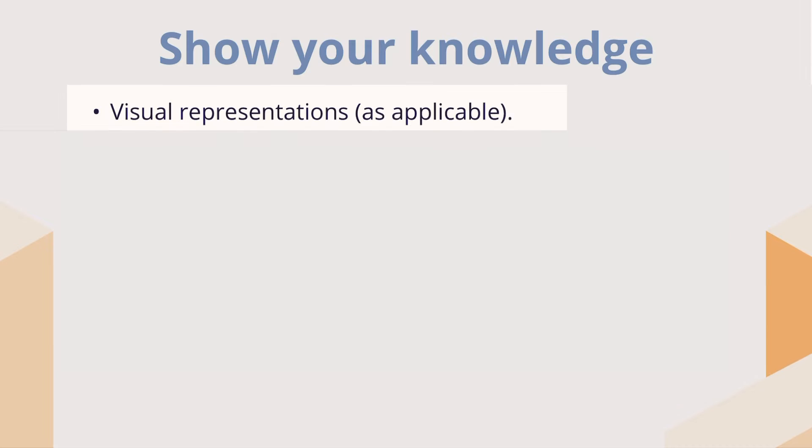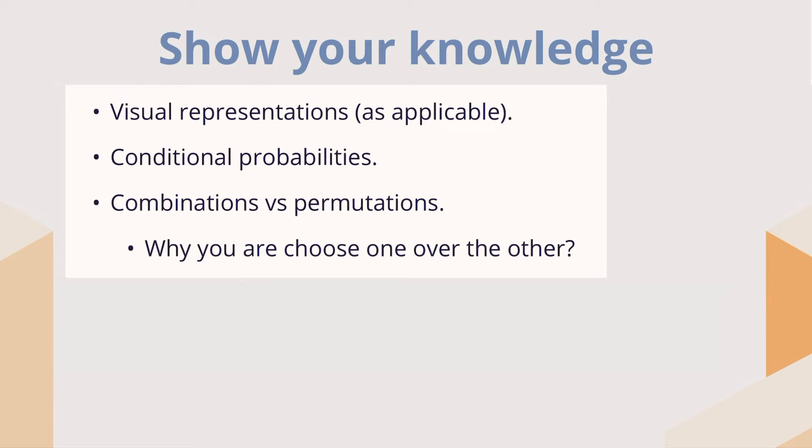So how do you show your knowledge? Visual representations are a great way — doing a tree diagram, a table, or a two-way table where you're looking at multiple things simultaneously. These are great ways to demonstrate your understanding of the probability layout and how probabilities can work within each other. Use conditional probabilities. Also discuss combinations versus permutations and why you would choose one over the other — in some probability situations order matters, in others it doesn't. Show that you know the difference between the two and that you're using the right one.